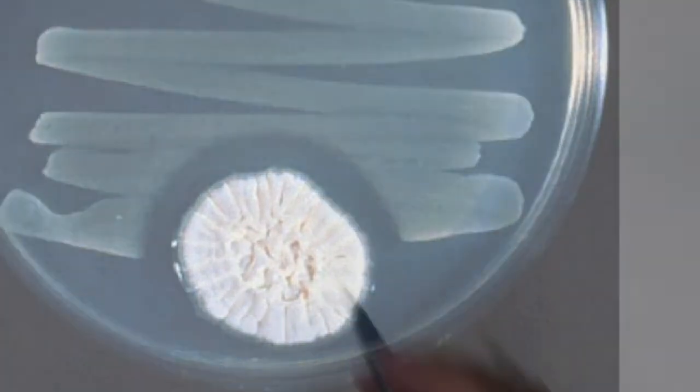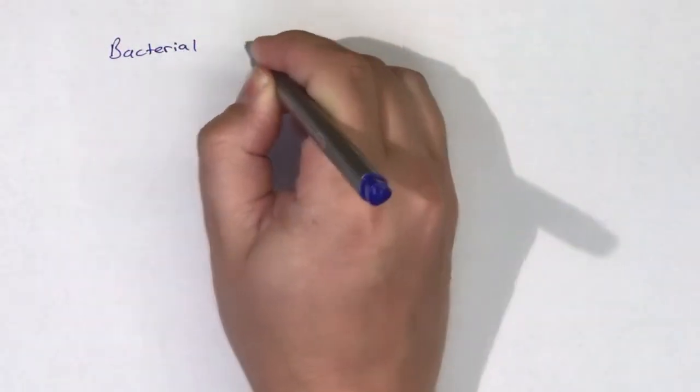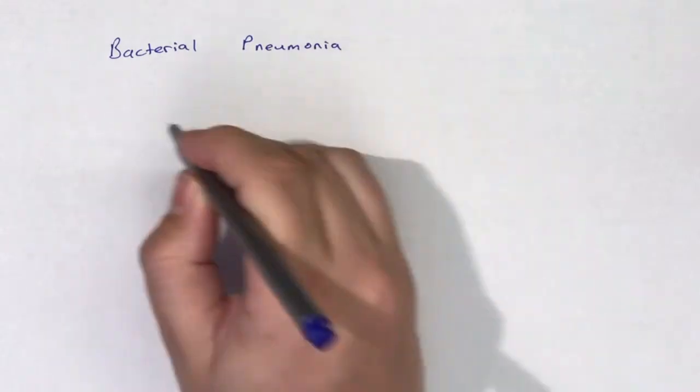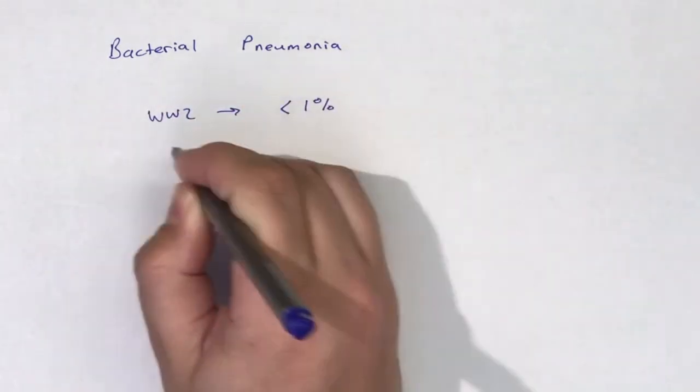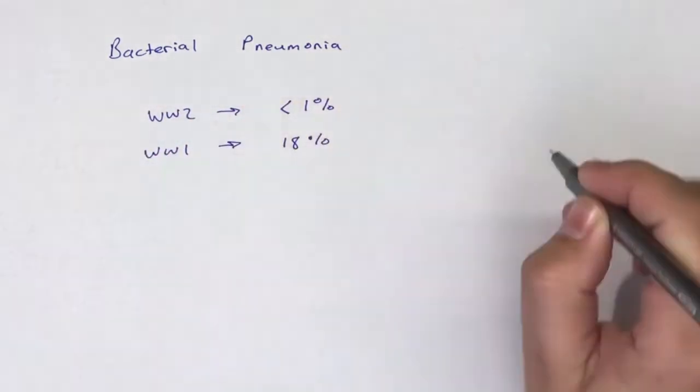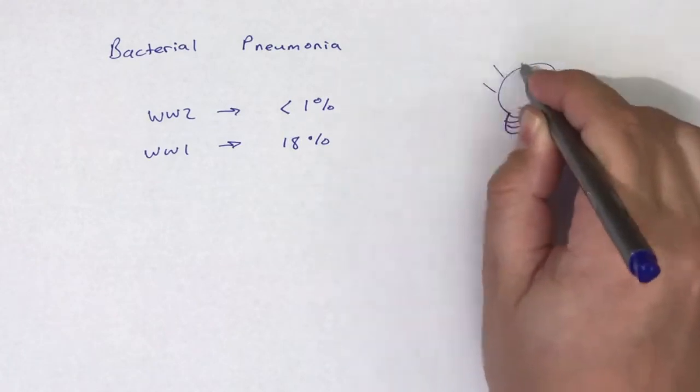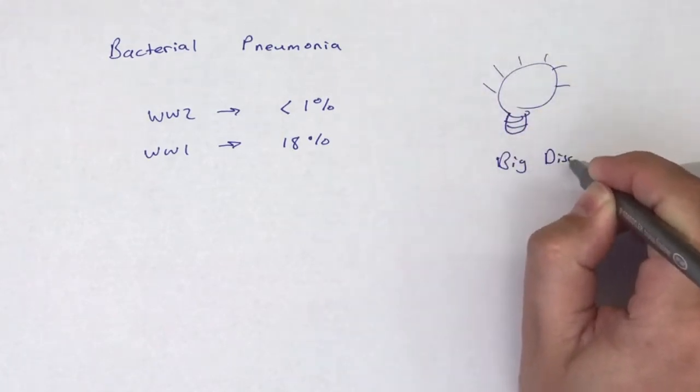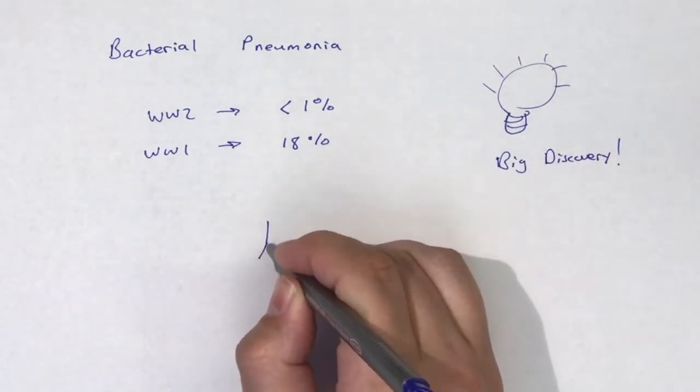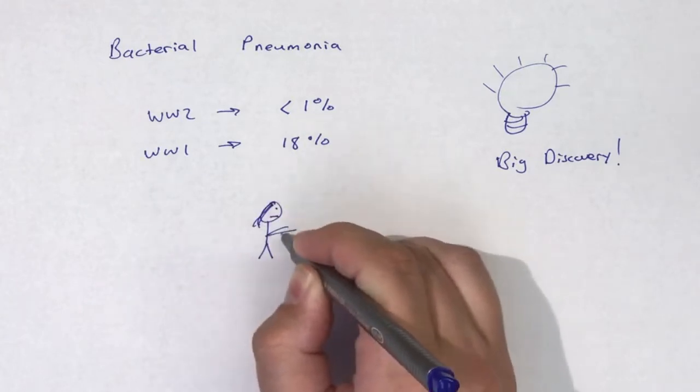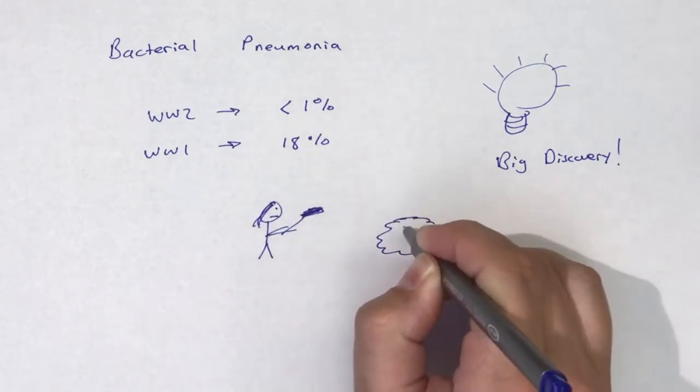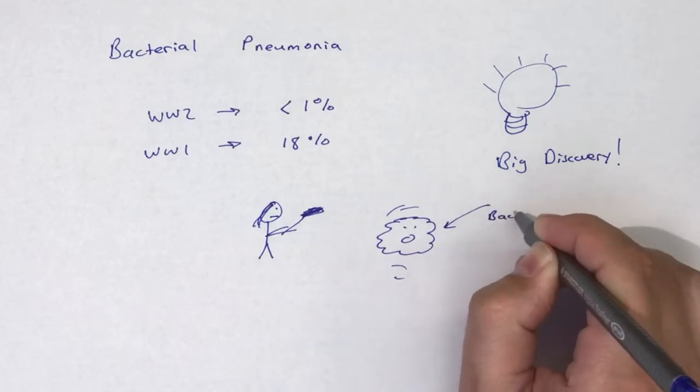According to an article from PBS by Dr. Howard Markle, the use of penicillin in World War II dropped the death rate of bacterial pneumonia to less than 1%. This was a sharp drop as the death rate of bacterial pneumonia in World War I was 18%. This was a big discovery for medicine and the first time infectious agents could be directly combated.